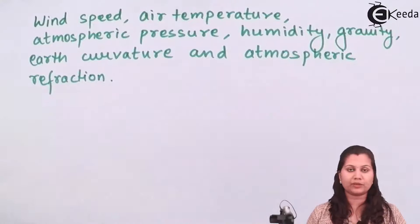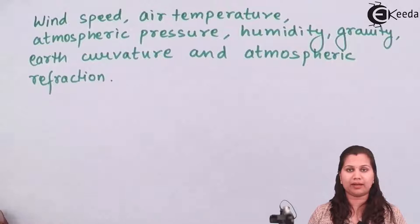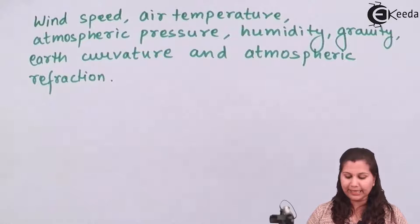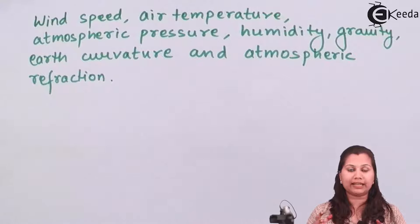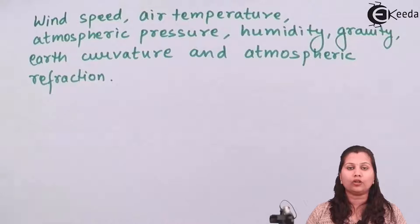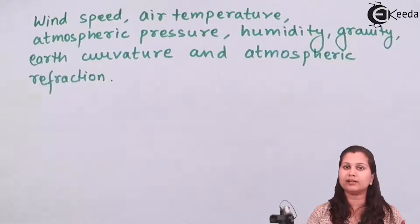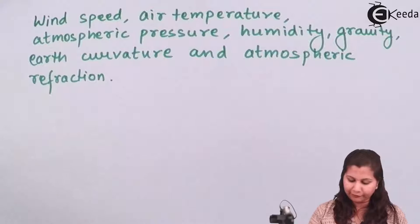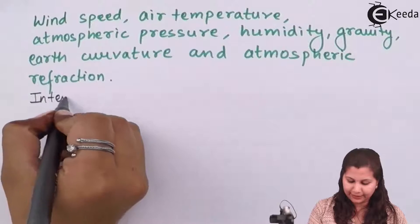Other environmental factors include humidity and the gravity of the earth. For example, if the instrument is kept in intense direct sunlight, the sunlight can cause expansion of the parts or components of the instrument, and due to that expansion the instrument readings can change. Since sunlight is a natural factor, errors occurring due to it are called natural errors.